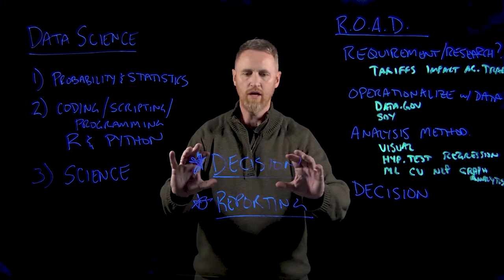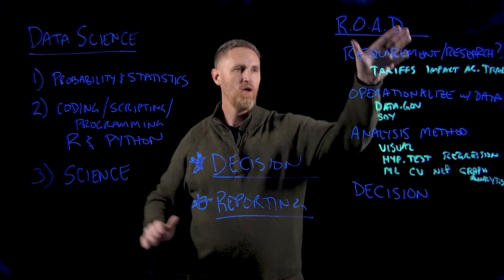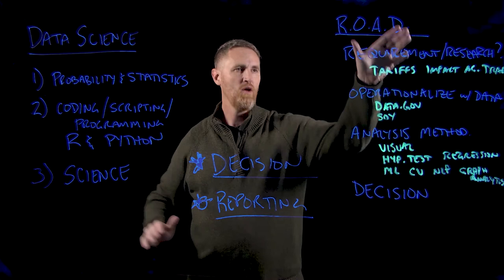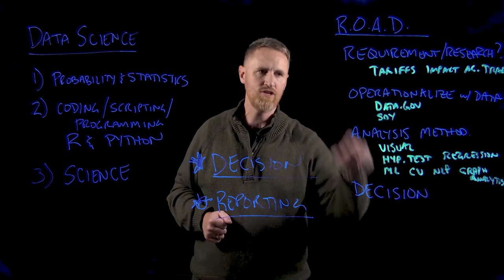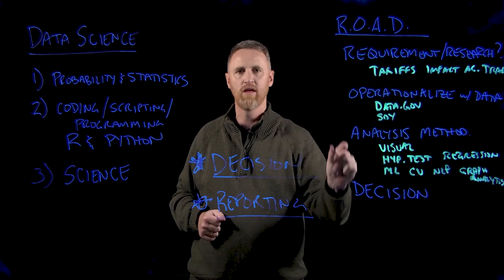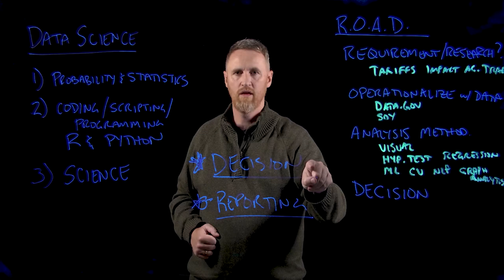To recap: data science requires a foundation of probability and statistics, an understanding of programming, and the application of science. The science is the ROAD to success — identifying a requirement, operationalizing with data, selecting an appropriate analysis method, and defining the decision. You implement that road in the planning phase before collecting a single data point or running a single analysis, using it to drive decision support. But these same tools can also answer reporting needs, which is a common ask of data scientists. Thank you for listening.